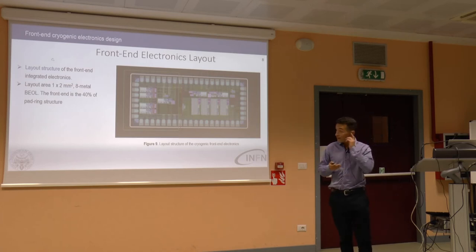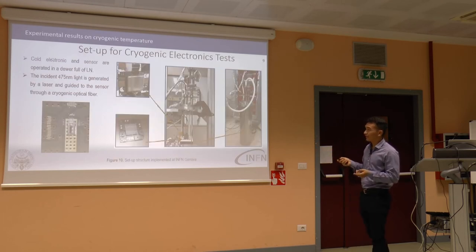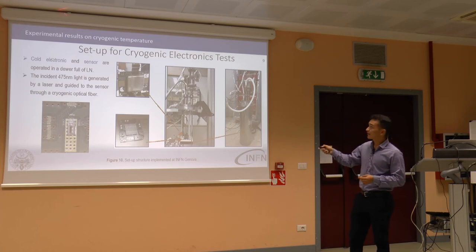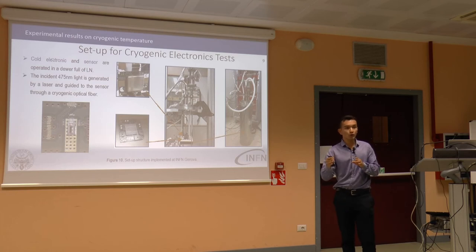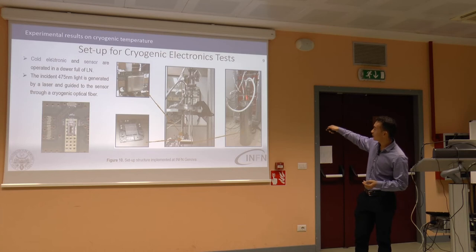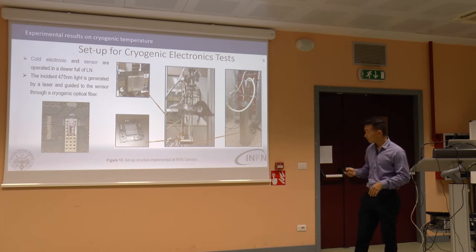Here is the layout of the front-end shown previously — a structure submitted more than one year ago. A tab-top implementation was used to test the electronics at 77 Kelvin using liquid nitrogen, which is close to liquid argon temperature and cheaper and easier to obtain. We can see the sensor, the electronics, and a dewar filled with liquid nitrogen, with a fiber entering to provide light inside the dewar.